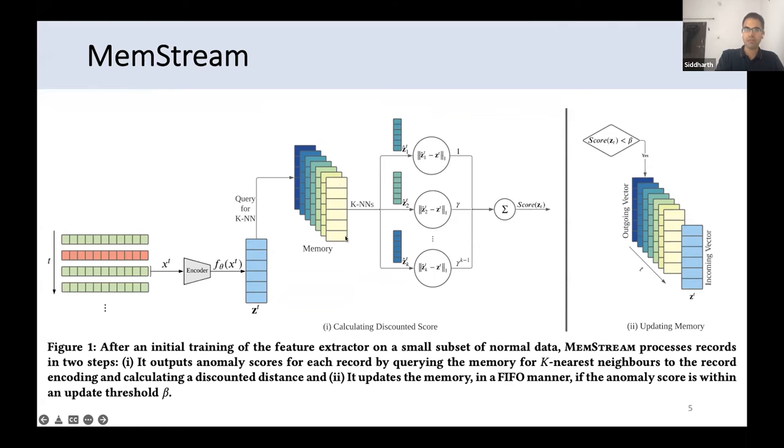This is the memory model. It's querying the memory for k-nearest neighbors for the record encoding and it calculates a discounted score. This discounted distance is actually our anomaly score which happens by querying the memory in a k-nearest neighbor fashion. Once we've got that score, if the score is within an update threshold, we'll update the memory and that update is done in a FIFO manner.